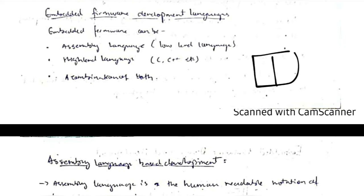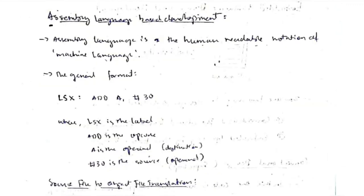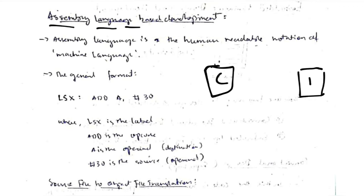There are three types of languages used in embedded development. First is assembly-level language (low-level). Second is high-level language like C and C++. Third is a combination of both. Assembly-level language lies between binary (machine-understandable) and high-level (human-understandable) — it is partially understood by both humans and computers.